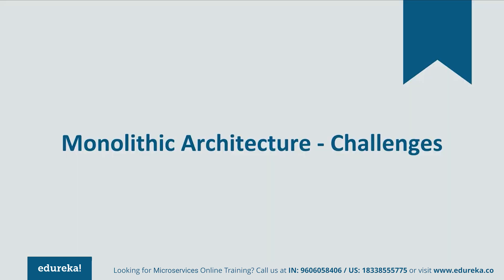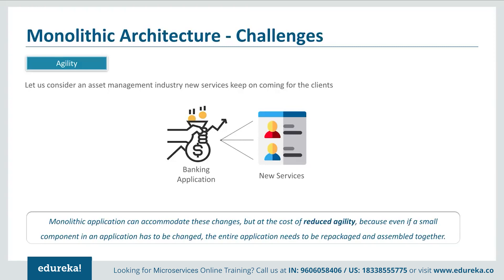Let's understand these challenges one by one. The first challenge is agility. Consider an asset management industry where different clients come with different investments and have to be offered different services. If any new services had to be given or any changes had to be made, the monolithic application could accommodate these changes, but at the cost of reduced agility. This happened because even if a small component had to be changed, the entire application had to be repackaged together.